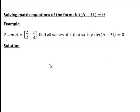We'll illustrate this in relation to the following example. Given A = [[2, 1], [2, 3]], find all values of λ that satisfy det(A - λI) = 0.